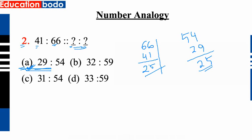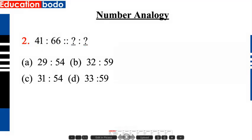29, 54 — the option is correct. Option A is correct. Okay, so option A is correct. Okay, next.